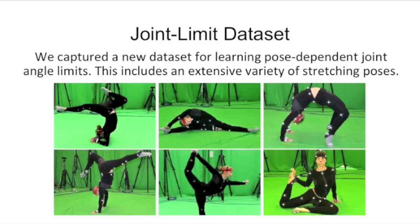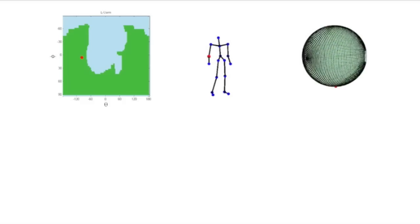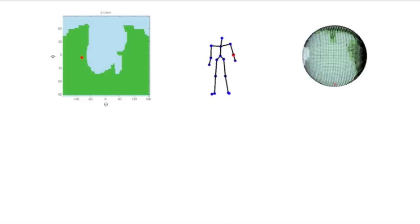Therefore, we captured a new dataset of human motions that includes an extensive variety of stretching poses performed by trained athletes and gymnasts. Here, we show a few sample images of our motion capture. From this data, we found the skeleton of the actor and learned joint angle limits.